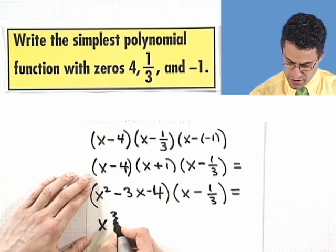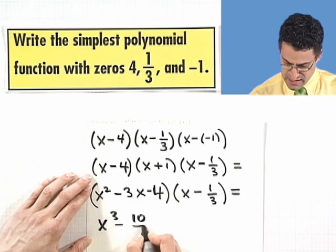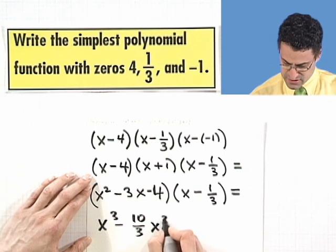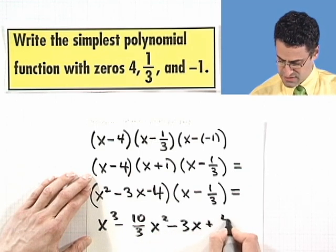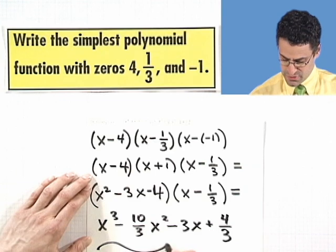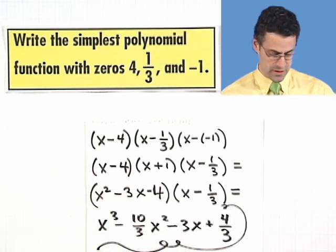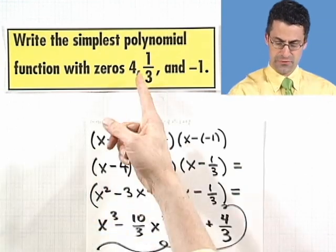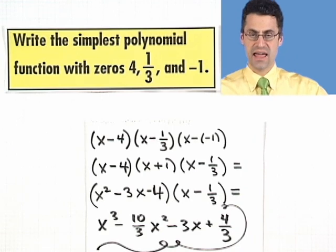we see x³ - 10/3 x² - 3x + 4/3. So there is the simplest polynomial that has zeros at 4, 1/3, and negative 1.